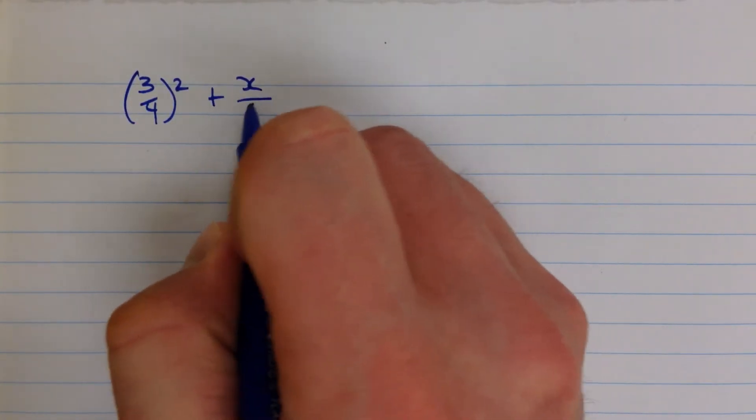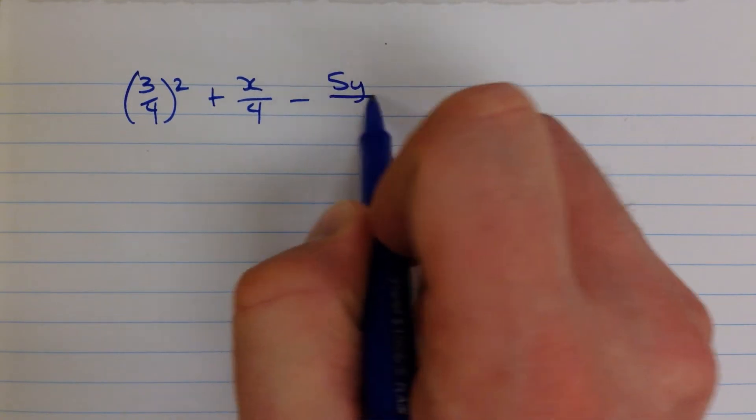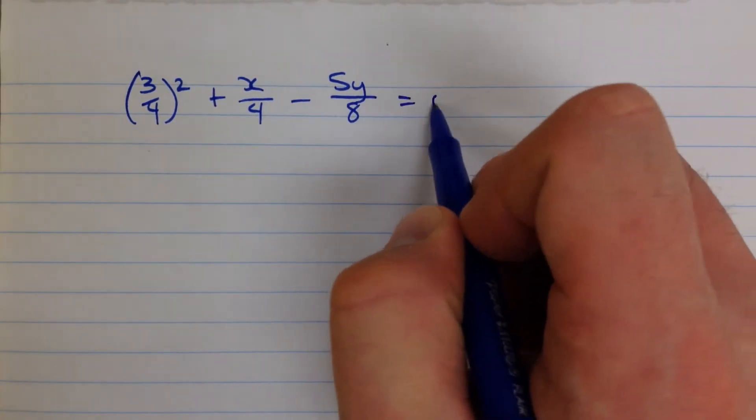3 quarters squared plus x over 4 minus 5y over 8 equals zero.